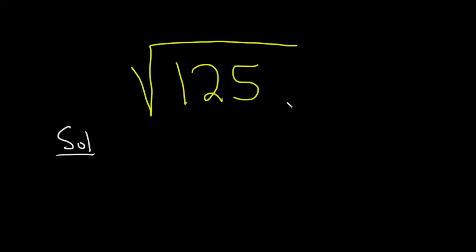So the way to do this is to think about what is a factor of 125 such that when you take its square root you're going to get a whole number.